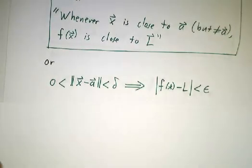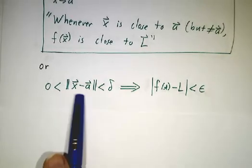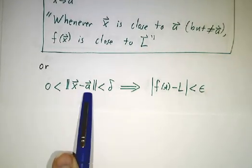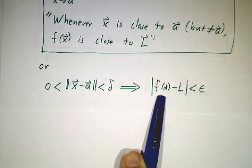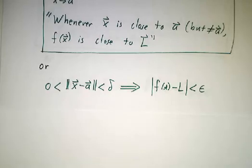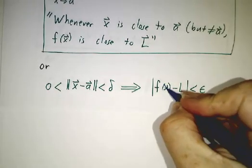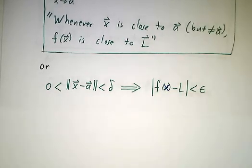And so we can put that also in terms of epsilons and deltas, that whenever the distance between x and a is positive but less than delta, the distance between f of x and L is less than epsilon.